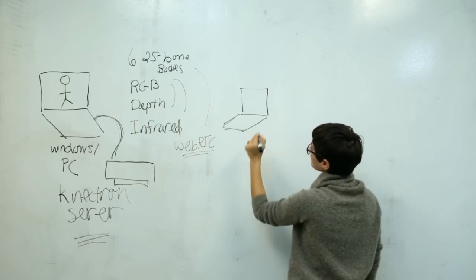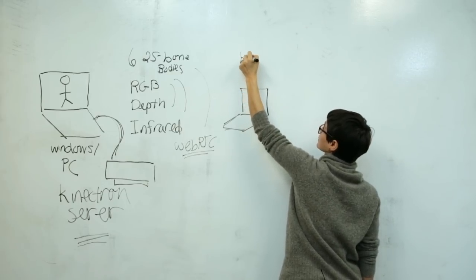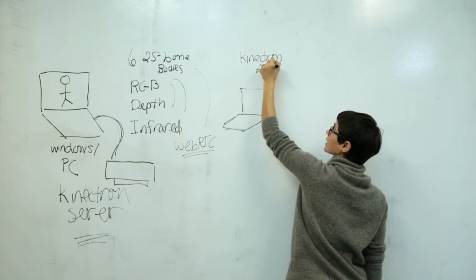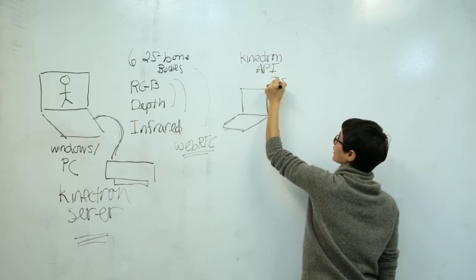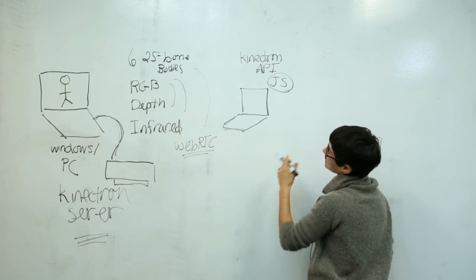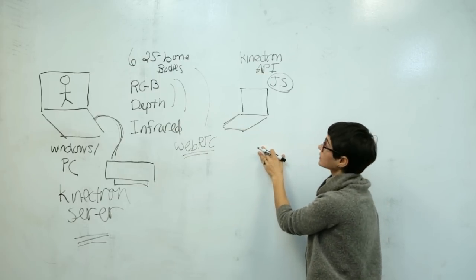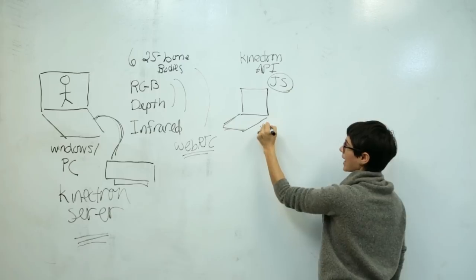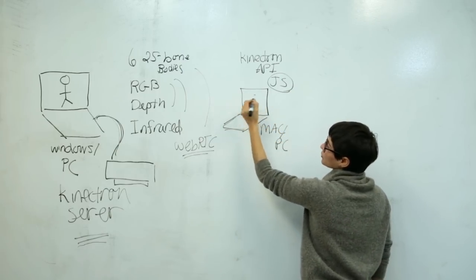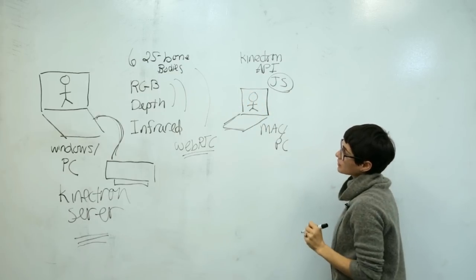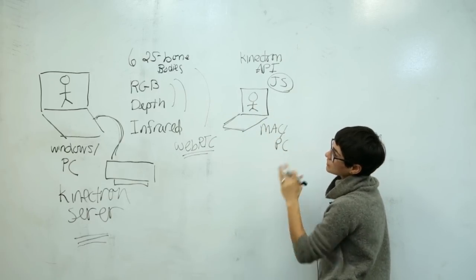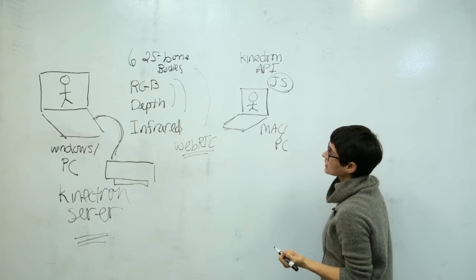So now you can have another computer over here that can listen to the information that's coming over the network from the Kinectron server. So this computer is now running the Kinectron API, which is just a JavaScript library that you run in your browser. So you run it in something like Google Chrome. And because it's running in the browser and you don't actually have the connected to this computer, this can actually be a Mac or a PC. And then in real time, it can just listen for that information and draw the Kinect data here at the same time. So that's sort of the very, very basic part of Kinectron.